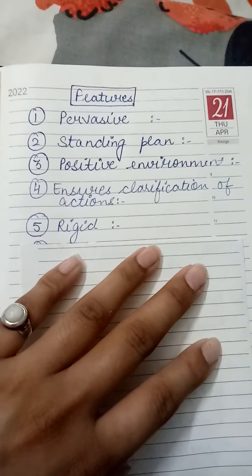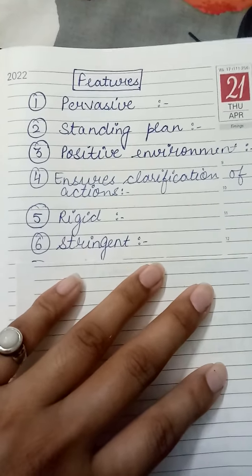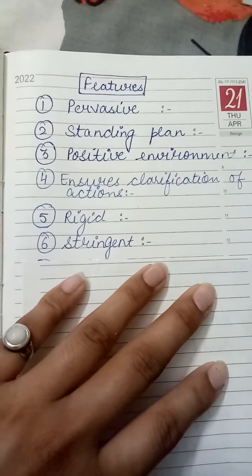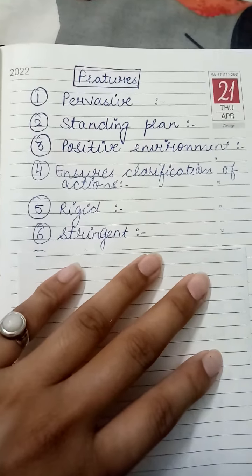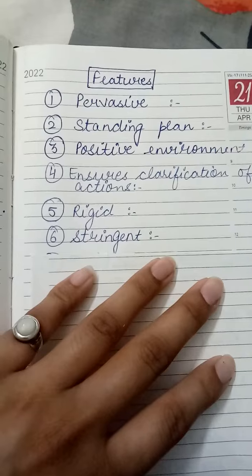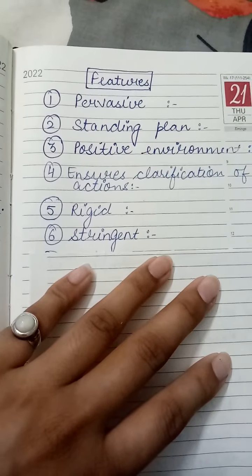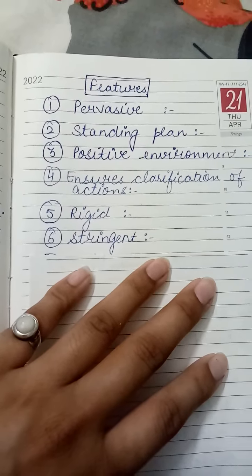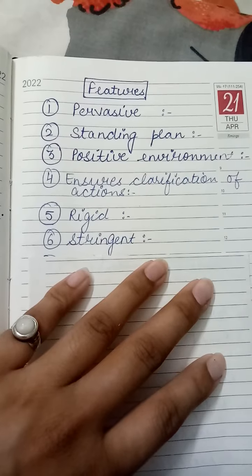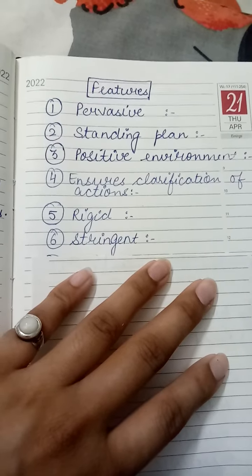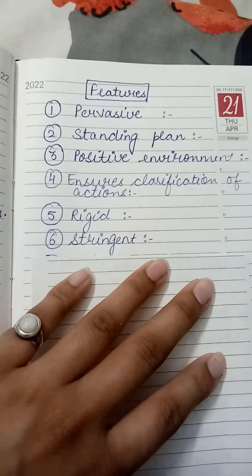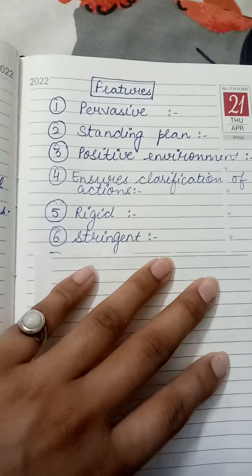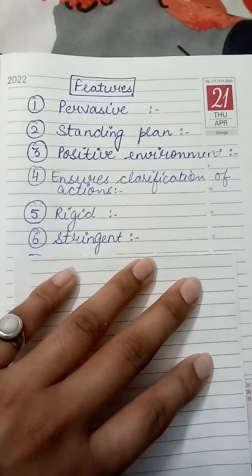Next we have stringent — meaning strict. When rules are made, they are made strict. It is not like an organization will say you can smoke from 4 pm to 5 pm. No smoking means no smoking — no employee is given any sort of lenience in any way.